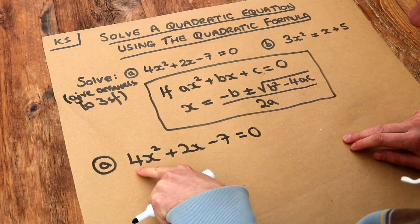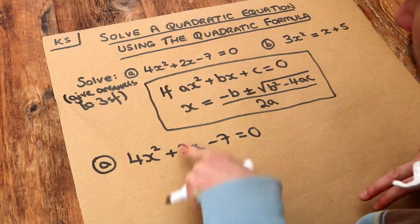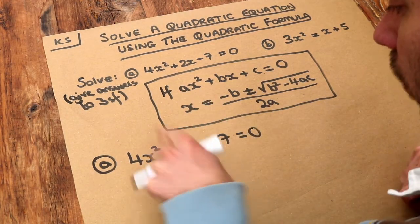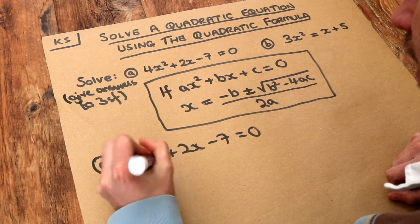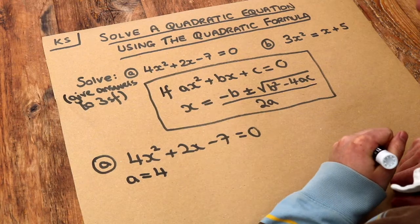Now we've got an expression of the form ax squared plus bx plus c equals zero. I always write out what the a, b and the c are. So we've got ax squared, we've got 4x squared. Can you see that the a is 4? a is just the number in front of the x squared, also known as the coefficient of x squared.